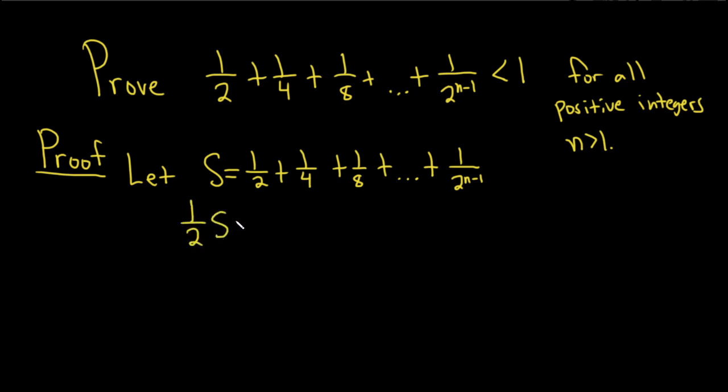So we have (1/2)S, and that's equal to, and then now we'll multiply each of these by 1/2. So this will be 1/4 + 1/8 + 1/16 + ... + 1/2^n. Good stuff.